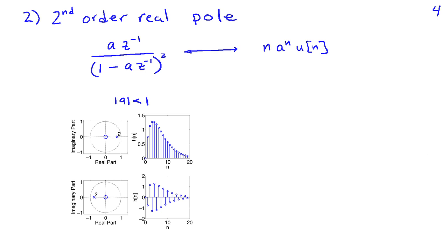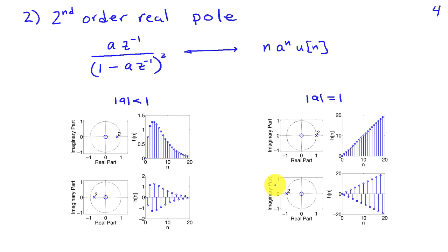For a second-order real pole, we have a multiplication by n, giving n a^n u(n). For a double pole at z equals 0.8, the impulse response initially grows due to the n factor, but then a^n decays faster than n grows, giving a rising-then-falling shape. Similarly, a double pole on the negative real axis gives the same envelope but with sign alternating each sample. A double pole at z equals 1 gives a ramp n u(n), and at z equals -1 also gives a ramp with alternating sign — both unstable systems.